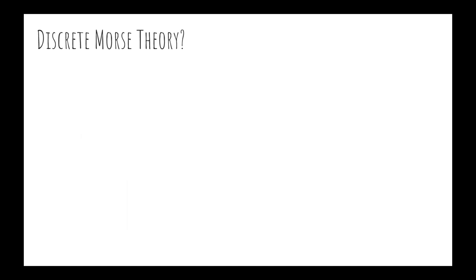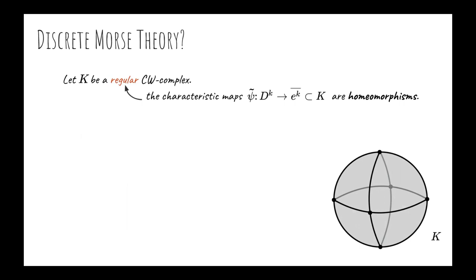Start with a regular CW complex. A complex where the characteristic map of every cell is a homeomorphism with its image. For example, this satisfies this condition. And for instance, every simplicial complex is a regular complex. Then, you need to construct the Morse function. That is, a labeling of the cells of the complex in such a way that for every cell, the number of faces and co-faces for which the value of the function does not increase with the dimension is at most one.